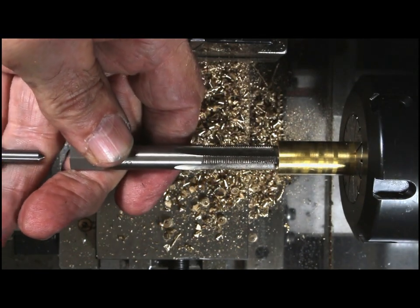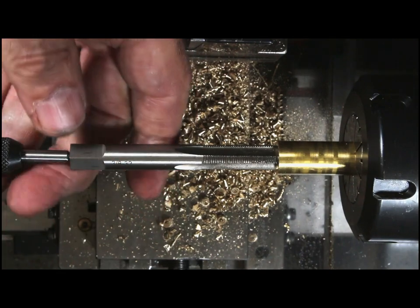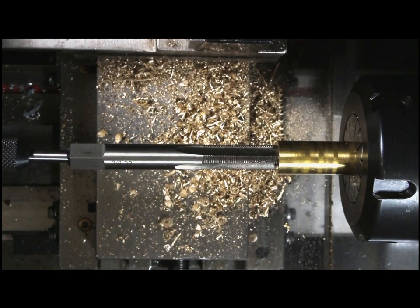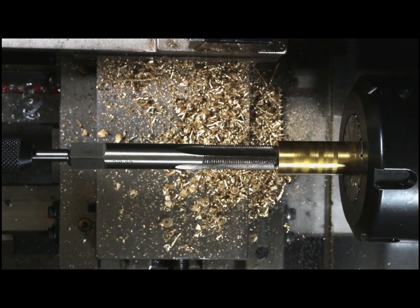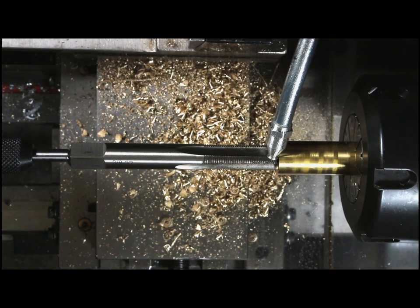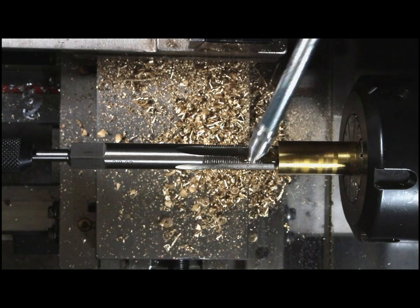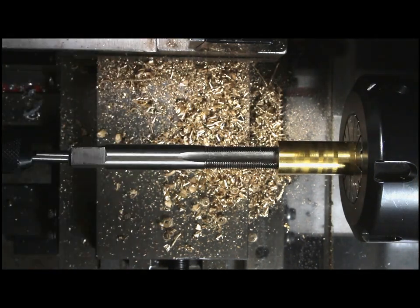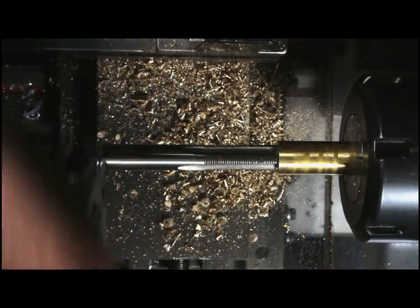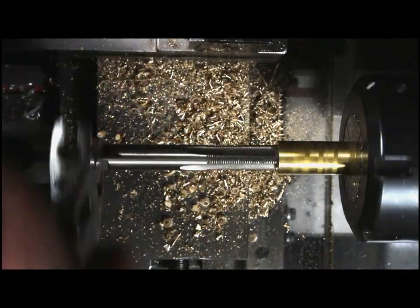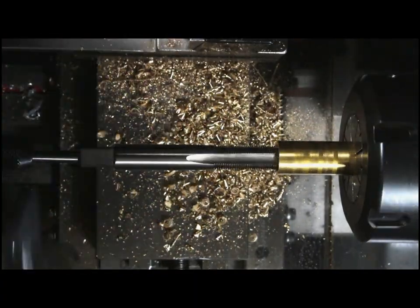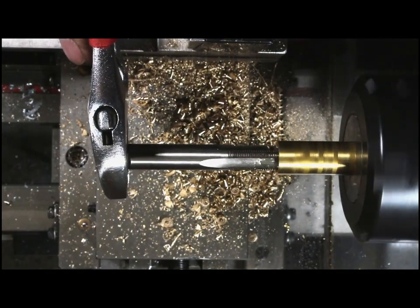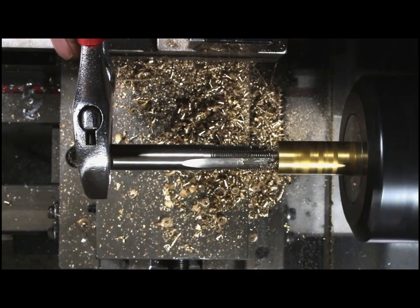So this is the 3/8 by 32 tap. Getting it set up in my tap guide. Put a little 30 weight oil in there just to get it going. And I've got a wrench on that end and a tommy bar on the chuck end and just work my way in. Driving it out with the motor just comes out a lot quicker that way.